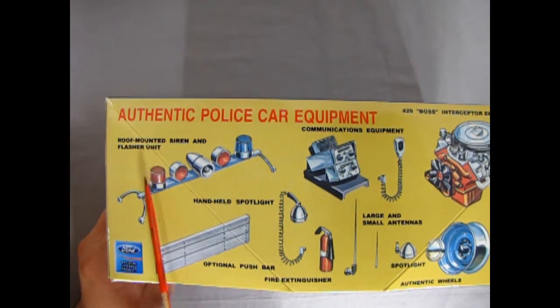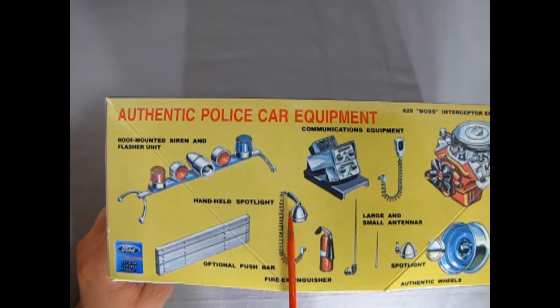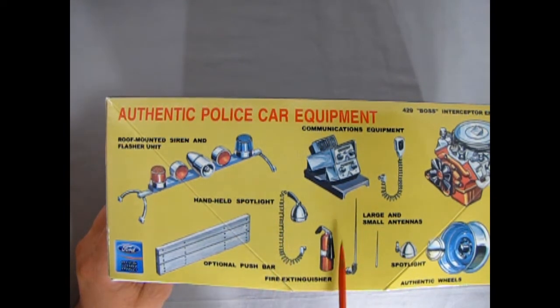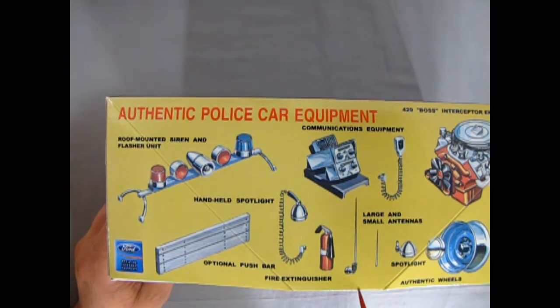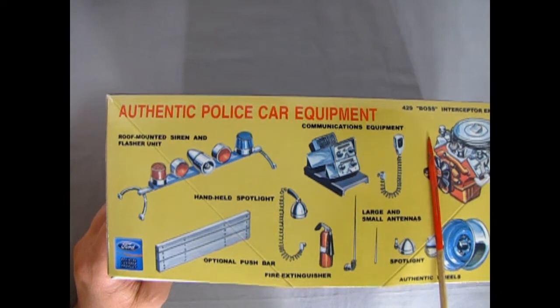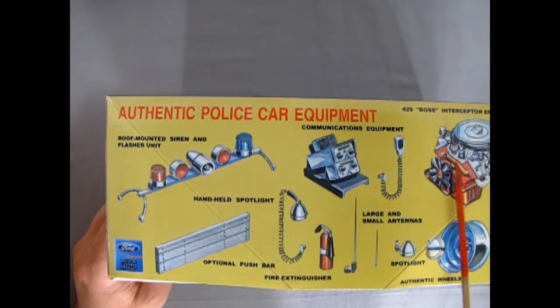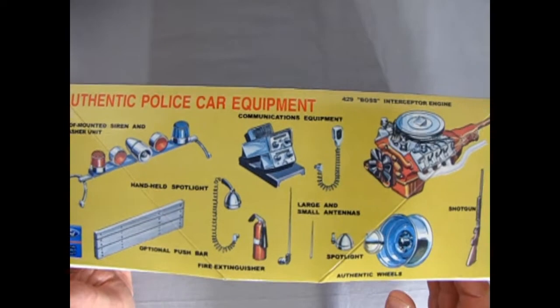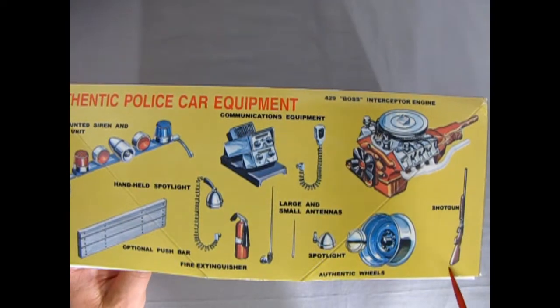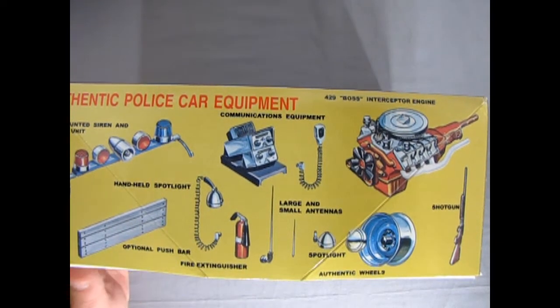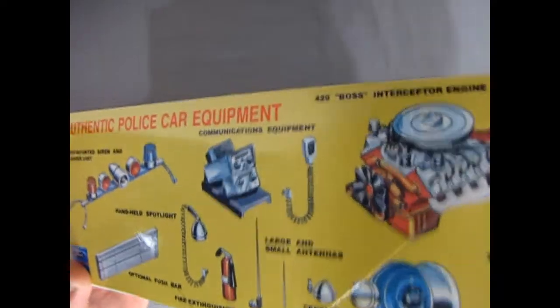If we flip up this box here, we can see the groovy pieces that come in this kit, which includes authentic police car equipment: the roof mounted siren and flasher unit, the handheld spotlight, optional push bar, fire extinguisher, communications equipment right out of 1970, antennas large and small, spotlights, authentic wheels with the dog dish hubcaps, and the 429 Ford Boss Interceptor engine.